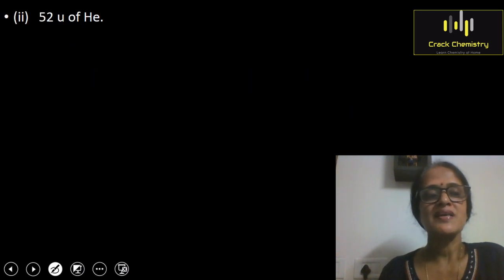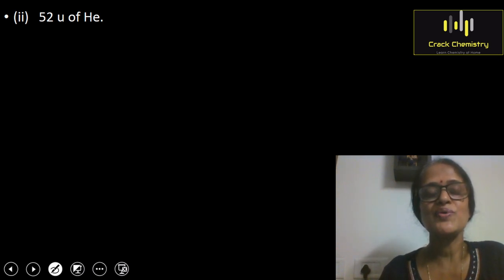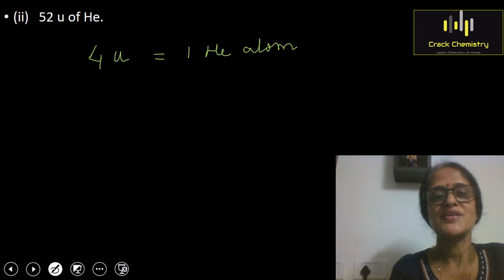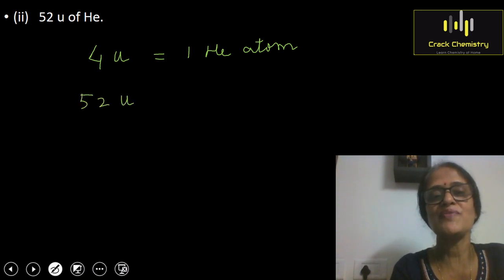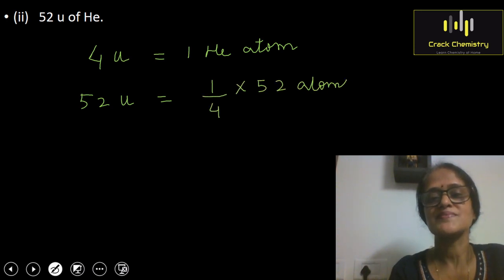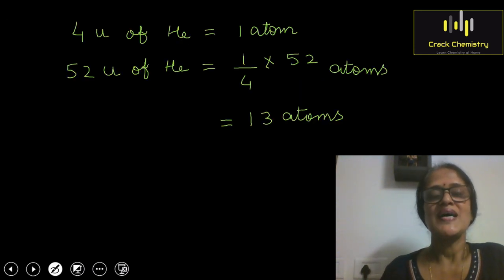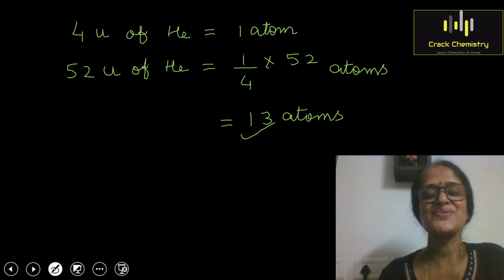Next, calculate the number of atoms in 52 U of helium. The atomic mass of helium is 4 U, so 4 U corresponds to 1 helium atom. Therefore, 52 U of helium will have (1/4) × 52 atoms, which equals 13 atoms.